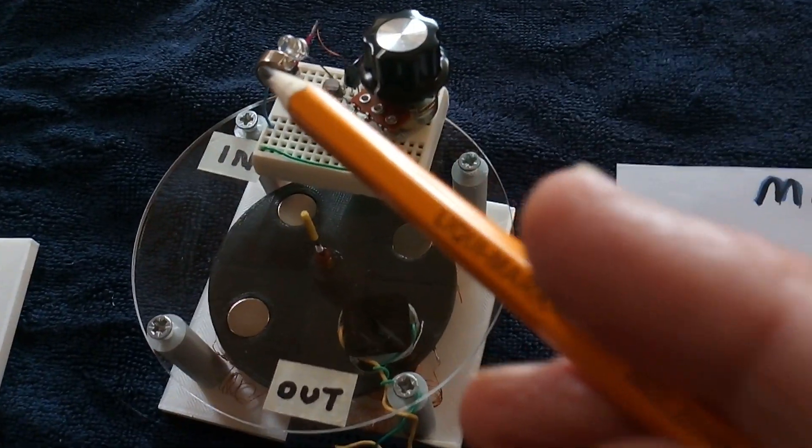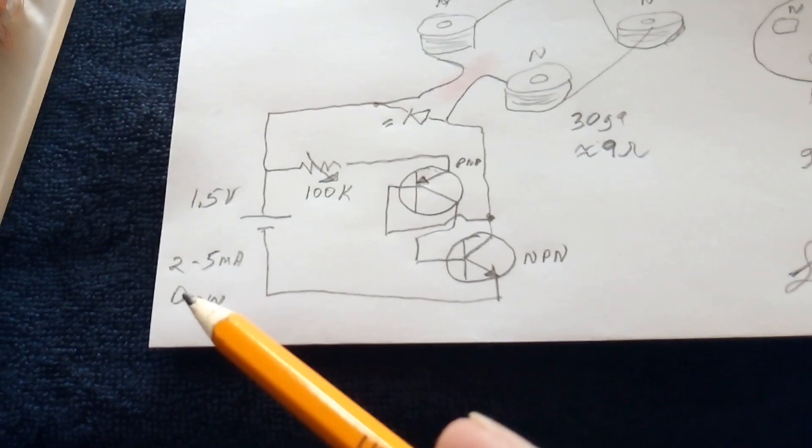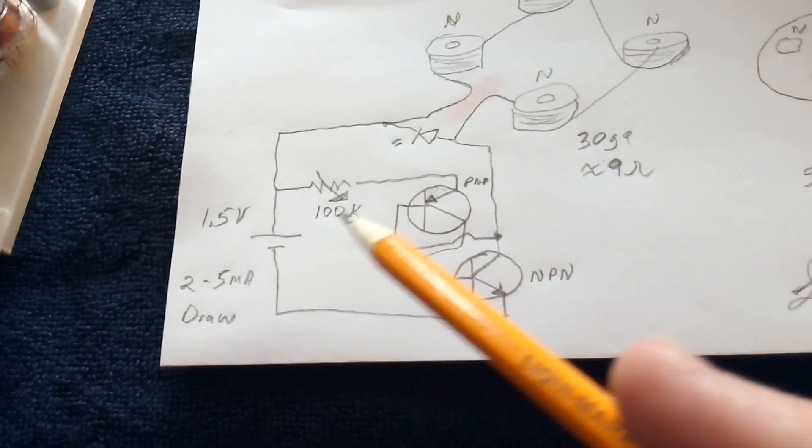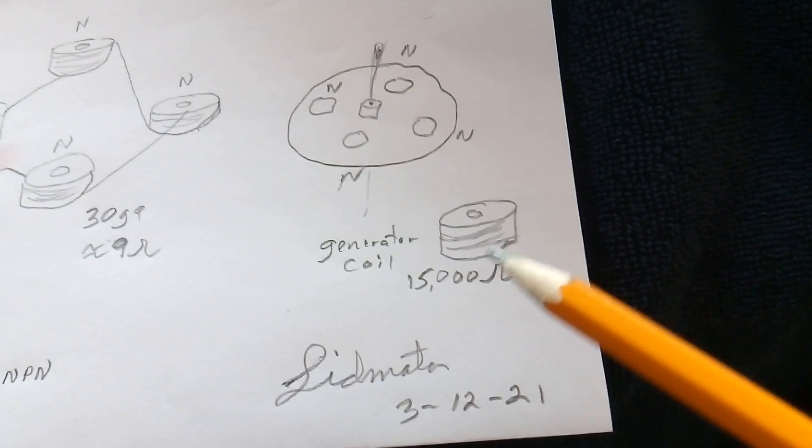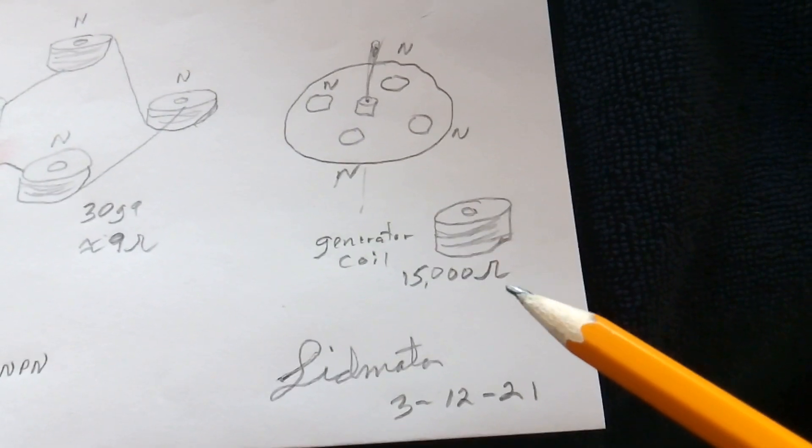I'm running on a button cell right there, and the amp draw is anywhere from 2 to 5 milliamps with a variable resistor. The generator coil is out of a 240 volt AC relay. It's fine wire, 15,000 ohms, to get the voltage I need from the RPMs.